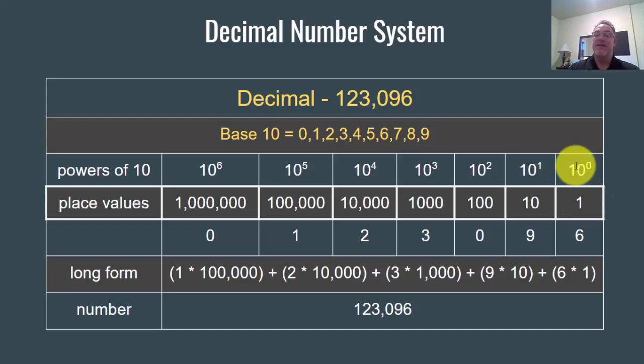So if we look at this, this is the ones place, 10 to the 0, the tens place, 10 to the 1, the hundreds place, 10 to the 2. And then in long form, it means we have 1 times 100,000, we have 1 hundred thousand, plus 2 ten thousands, plus 3 one thousands, plus 9 tens, plus 6 ones, and we have the number 123,096. But it's based on powers of 10, starting with the ones place at 10 to the 0, and there's 10 numerals.